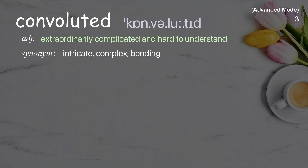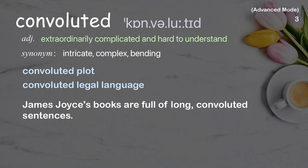Convoluted: extraordinarily complicated and hard to understand. Examples: convoluted plot, convoluted legal language. James Joyce's books are full of long, convoluted sentences.